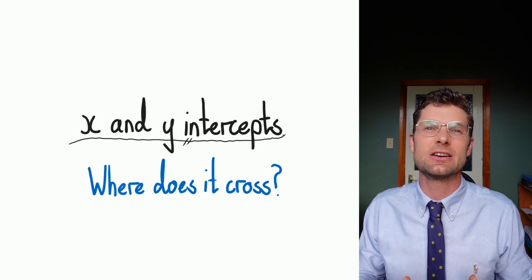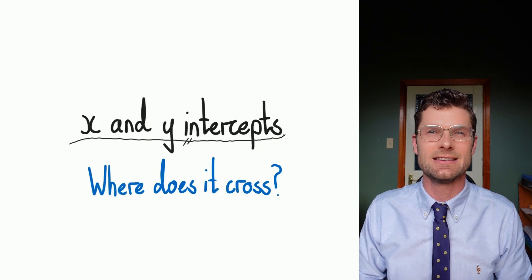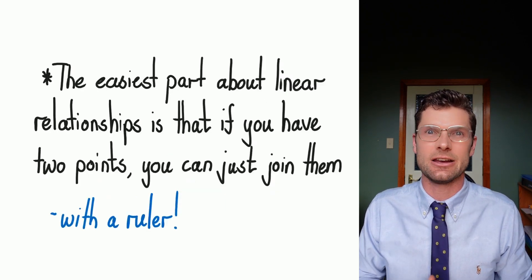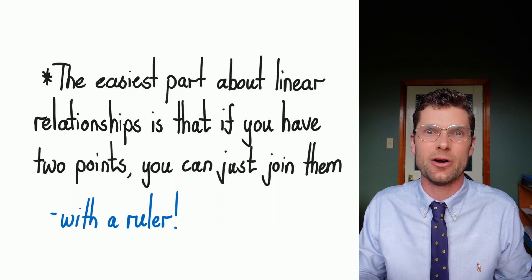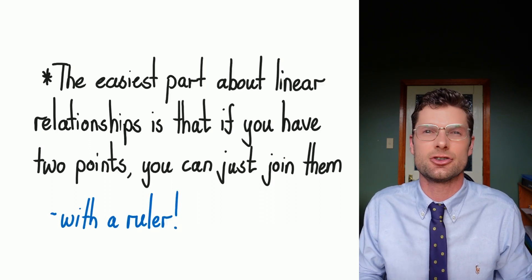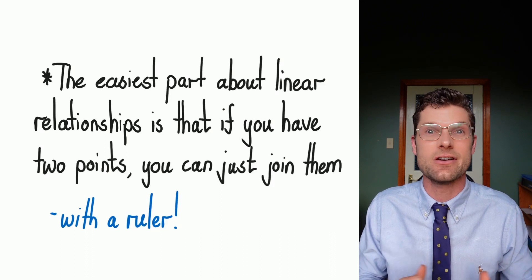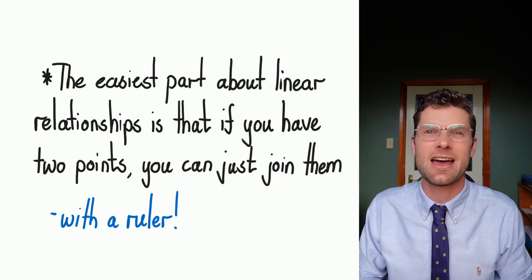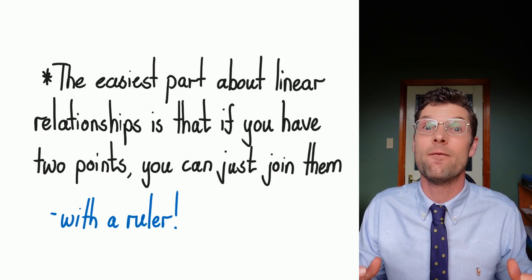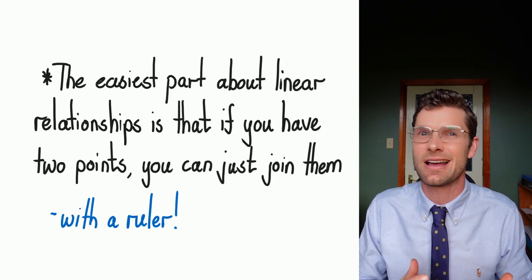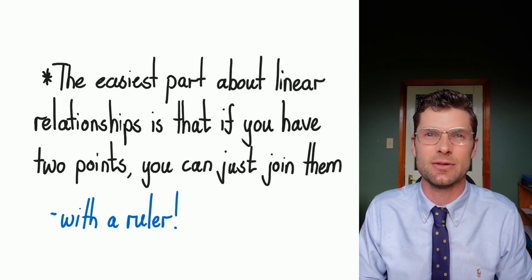The reason we're gonna do this is because we can graph something incredibly easy if we've got these two points. That's actually the best part about linear relationships. If you've got two points, because we know for sure it's a dead straight line, you just have to join them together, obviously with a ruler to make sure it's perfect, but if you've got two points that you know for sure are part of your graph, chuck them down and just draw a line between them.